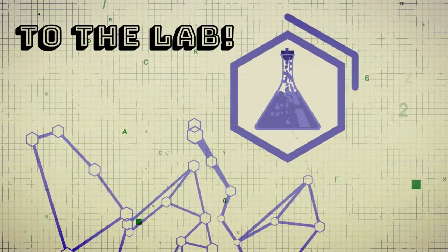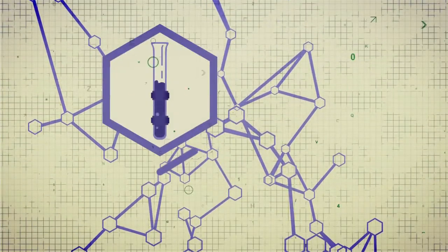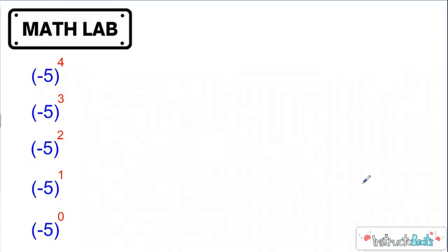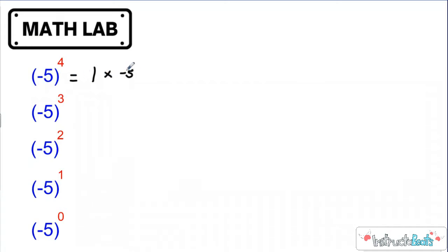Let's take a trip to the lab to check that out. All right, so here we have the same base, and just like last lesson we have our exponents. Our base is going to be negative five, and we're going to start with this four. So if I was writing this in expanded form, I'm going to start with the one, and then my base is going to be a negative five. So I'm going to write that in parentheses and have four copies of that negative five.